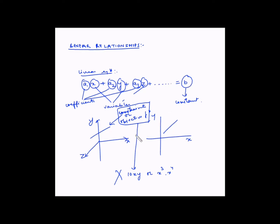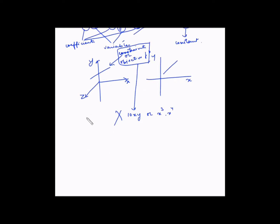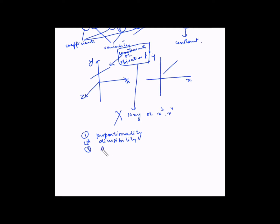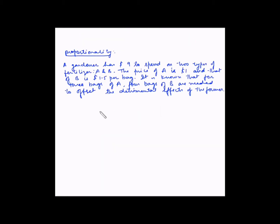These linear relationships have some properties: proportionality, divisibility, and additivity. Let us understand these three terms. Let us first understand the term proportionality.